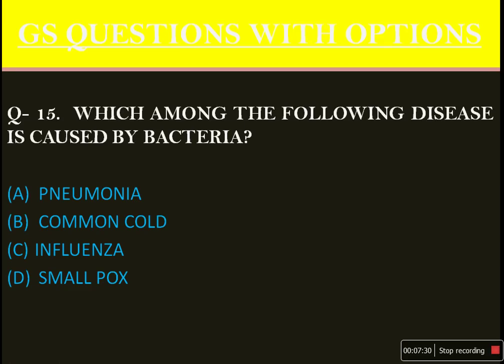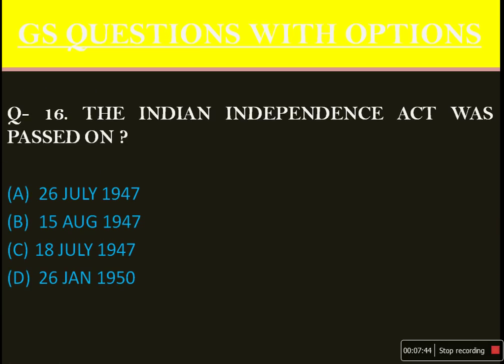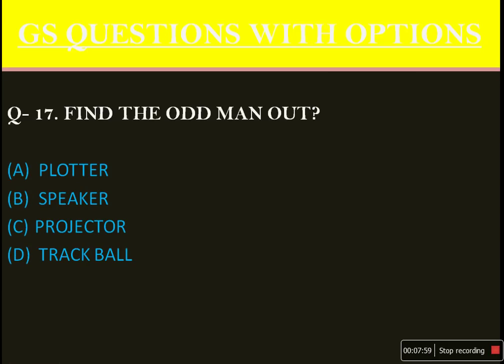Which among the following diseases is caused by bacteria? Common cold, influenza, and smallpox are caused by viruses, so those are eliminated. The answer is option A: pneumonia, which is caused by bacteria. The Indian Independence Act was passed on — straightforward question — 18 July 1947, option C. Many might have confused this with 15 August 1947. Find the odd man out: plotter, speaker, projector, trackball. Options A, B, and C are output devices, whereas trackball is an input device. Straightforward answer: option D.